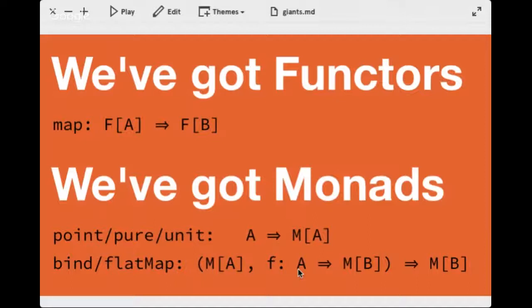The flatMap operation says: you have an M of A and a function that takes A and gives you M of B — given those two, you can get an M of B. It applies an operation internally to a value within a monad and does the mapping. These are the functors and monads you've probably worked with in a number of places — they're the two more basic concepts in category theory and are major components for FP.